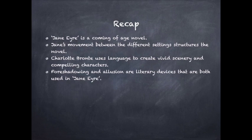To quickly recap what we've covered in the lesson: Jane Eyre is a coming-of-age novel. Jane's movement between the different settings structures the novel. Charlotte Bronte uses language to create vivid scenery and compelling characters. And foreshadowing and allusion are literary devices that are both used in Jane Eyre — so as you're taking notes, look out for them.